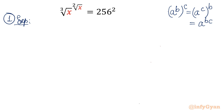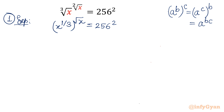So let us write this: cube root x as x raised to 1 over 3, whole raised to square root x, equal to 256 whole squared. Now I will use this property, so I will write this as x raised to square root x, whole raised to 1 over 3, equal to 256 squared.